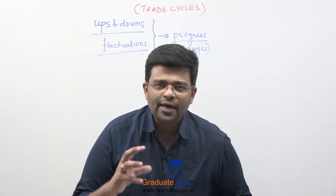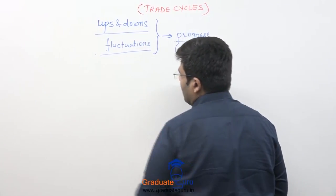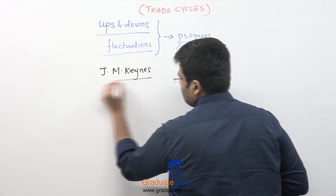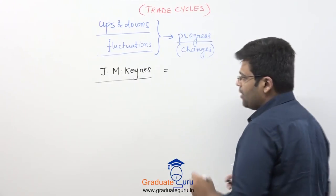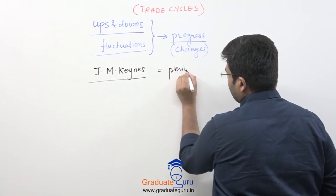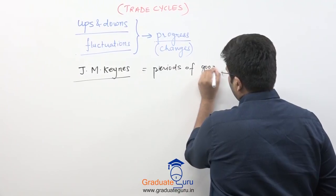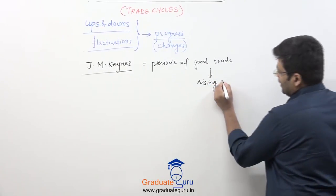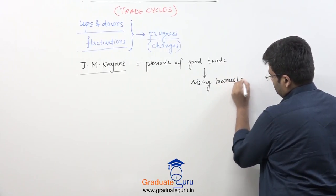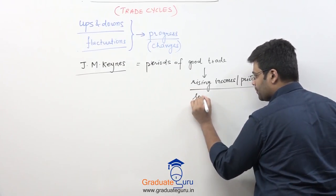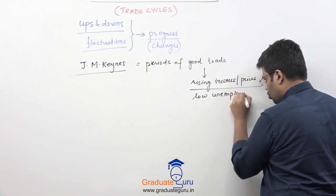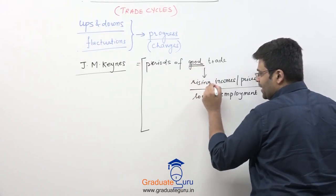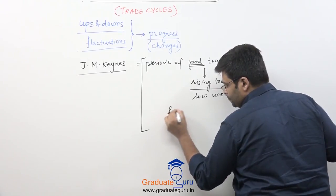So let's talk about what trade cycles are. John Maynard Keynes — J.M. Keynes, as we know, is the godfather of macro. He defines trade cycles as periods of alternating good trade and bad trade, or periods of good activity and bad activity. In good trade activity, your incomes and spending will rise — rising incomes, rising prices, and low unemployment.